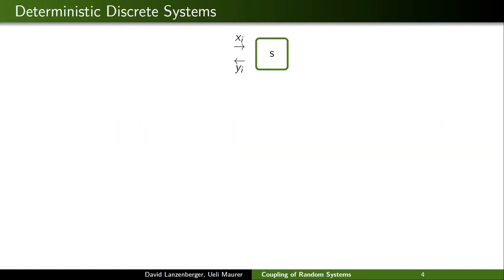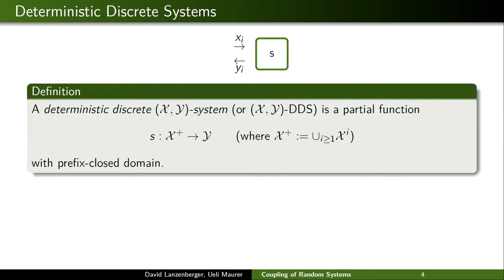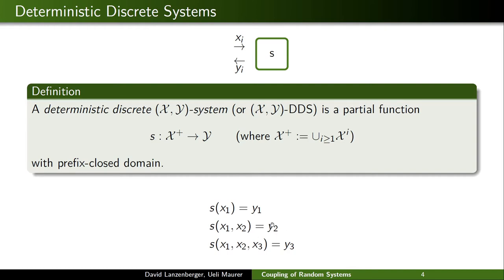The starting point of this new theory is what we call a deterministic discrete system. In the single query case, this would just be a function from x to y. More generally, if we have multiple queries, we say it's a partial function from the set of sequences over x to y. The idea is that the first output y1 is just a function of the first input, but the second output is a function of the first and the second input. This captures what you would classically call a stateful system, where the second output depends not only on the second input but also on what happened previously.